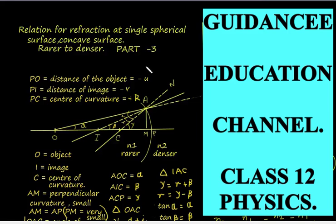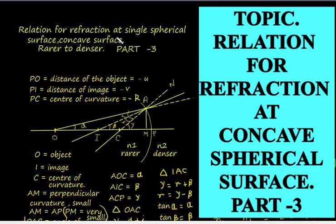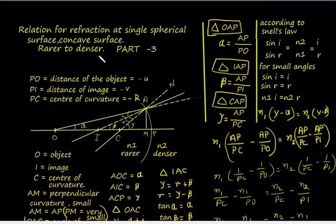Hello, welcome back to Guidance Education channel. In this video we are going to discuss the relation for refraction at a single spherical surface — concave surface, ray passing from rarer to denser medium. This is part 3 in this series. I have prepared a diagram here where O is the object and it is facing the concave surface.